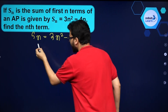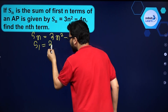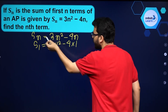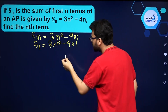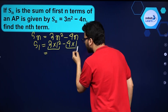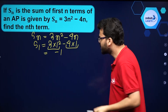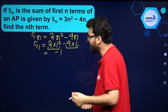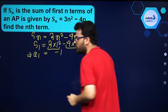If I put 1 over here and find S1, it is 3 into 1 squared minus 4 into 1, because whatever you do on one side you have to do the same on the other side. So S1 will be 3 minus 4, that is minus 1. Now S1 is the sum of the first term, which equals the first term itself — so this is a1.